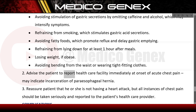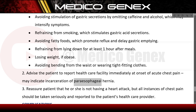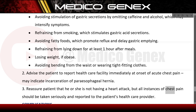Advise the patient to report to a health care facility immediately at the onset of acute chest pain, as this may indicate incarceration of a paraesophageal hernia. Reassure the patient that he or she is not having a heart attack, but that all instances of chest pain should be taken seriously and reported to the patient's health care provider.